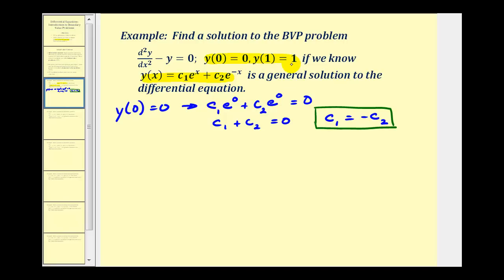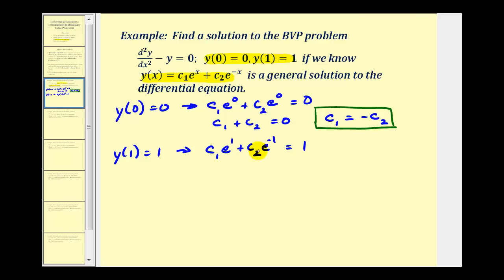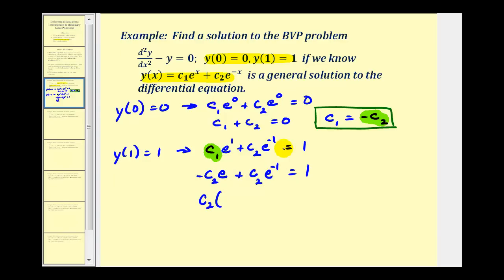Now we use the condition y(1) = 1. Substituting x = 1, we get c₁e¹ + c₂e⁻¹ = 1. This equation still has two unknowns, but we know c₁ = −c₂. Substituting, we get −c₂·e + c₂·e⁻¹ = 1. Factoring out c₂ gives c₂(e⁻¹ − e) = 1.